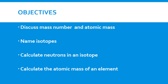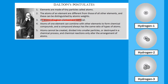We know atoms are composed of protons, neutrons, and electrons. Protons and neutrons are found in the nucleus and electrons surround the nucleus. Atoms of one element differ from atoms of another because they have a different number of protons — a different atomic number. The discovery of the neutron led scientists to the realization that atoms of the same element can have a different number of neutrons, and these are called isotopes.